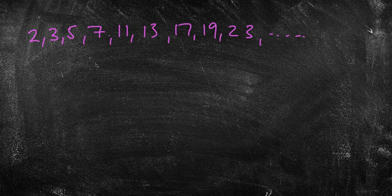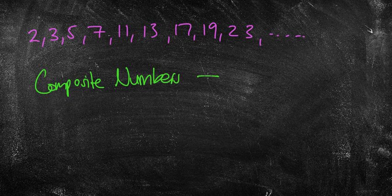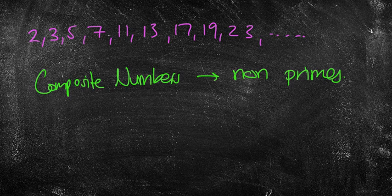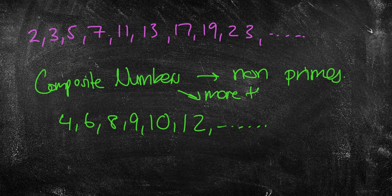The very last thing I'm going to talk about is composite numbers. Composite numbers are basically non-primes, things like 4, 6, 8, 9, 10, 12, etc. A composite has more than two factors.